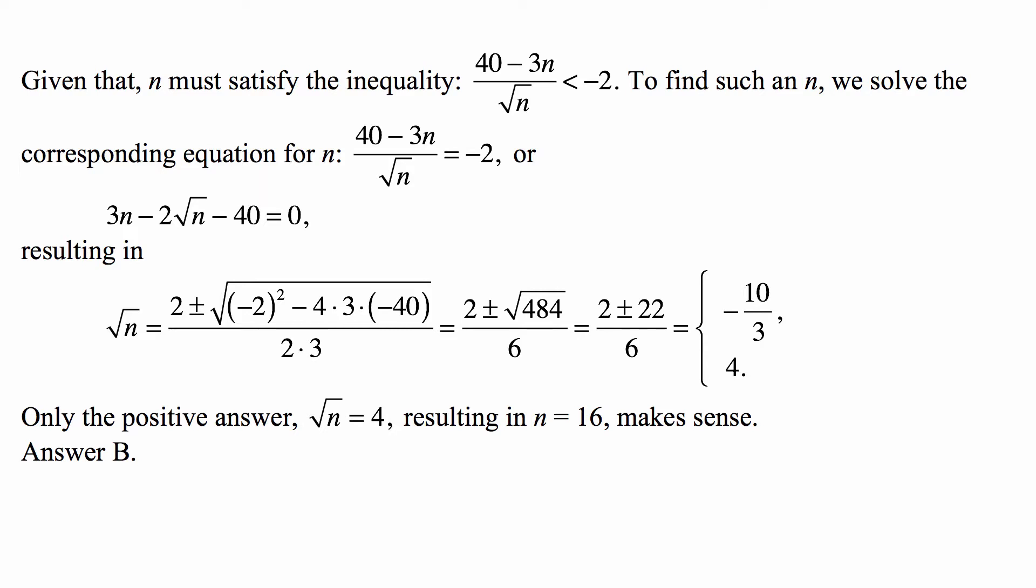But this is the square root of an integer, so the answer of -10/3 doesn't make any sense. So only 4 makes sense as the answer: √n = 4, and then n = 16, and that's the answer that we pick.